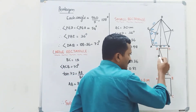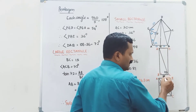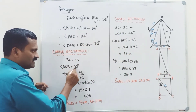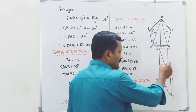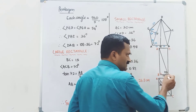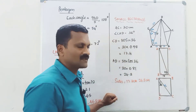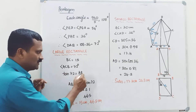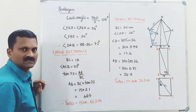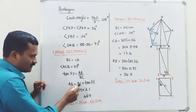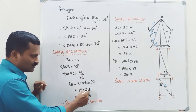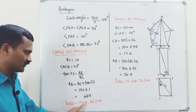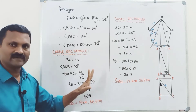For the large rectangle ABCD: BC is 15 centimetres, angle ACB equals 72 degrees, and BC equals 15 — this is the width. The length is found using tan 72, that is opposite by adjacent, AB by BC. So AB equals BC into tan 72, that is 15 into 3.1, which equals 46.5. Therefore the sides of the large rectangle are 15 centimetres and 46.5 centimetres.